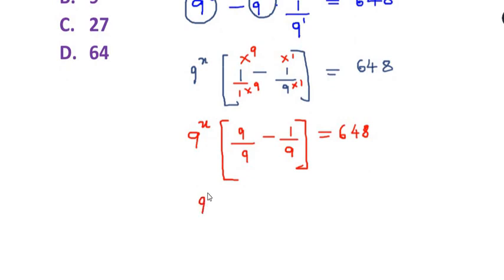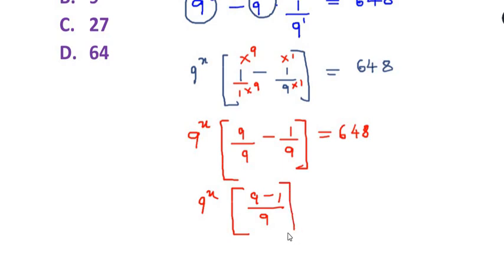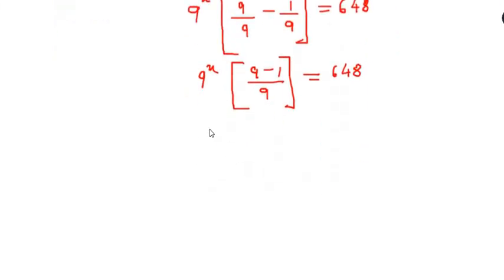Since the denominators are the same, we keep the same denominator and combine the numerators: 9 minus 1 equals 8. So we get 9^x times 8 over 9, equal to 648.